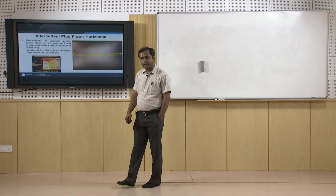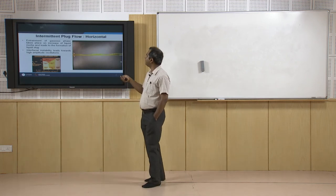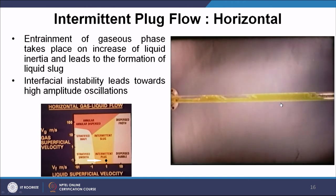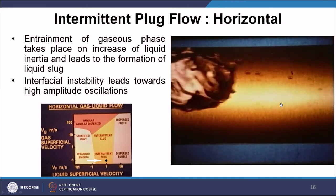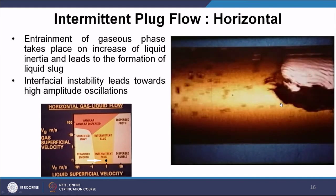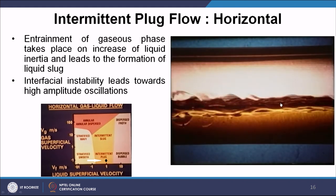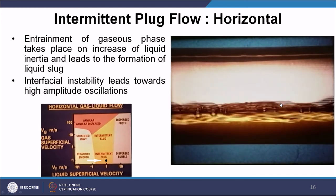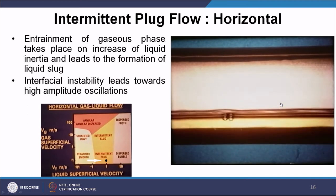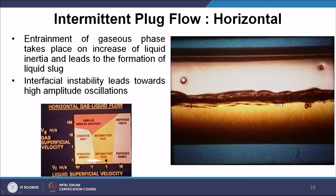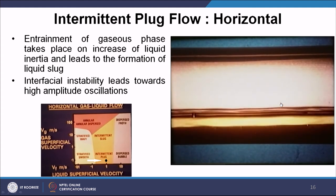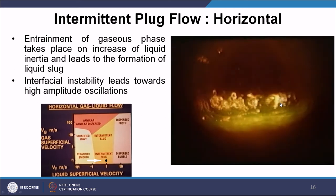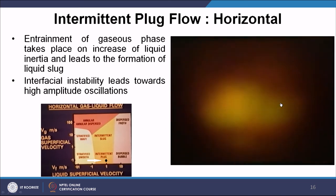Intermittent plug flow is a flow regime for horizontal flow where an intermediate gaseous plug touches the upper portion of the tube. The gaseous phase ends intermittently and liquid comes in between as a plug. This is caused by increasing liquid phase velocity from the stratified smooth condition.